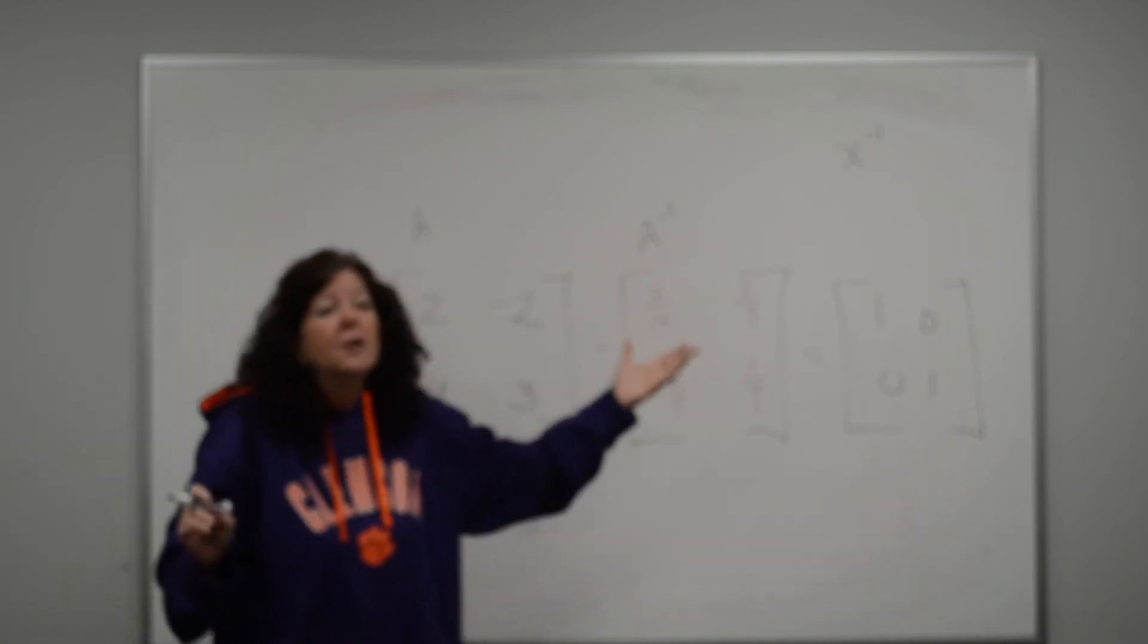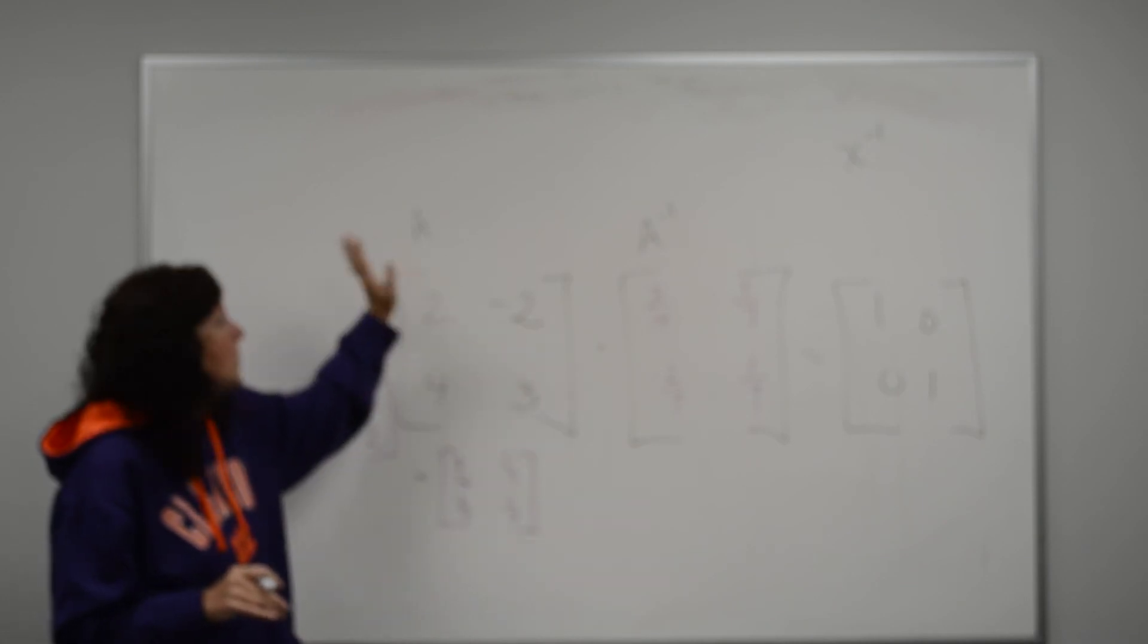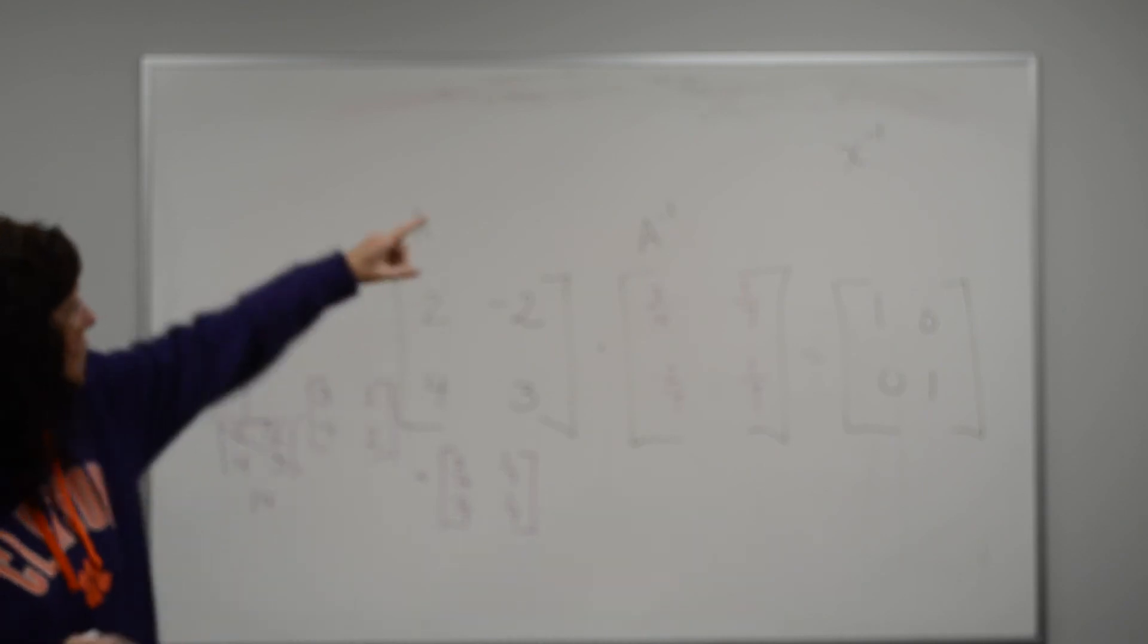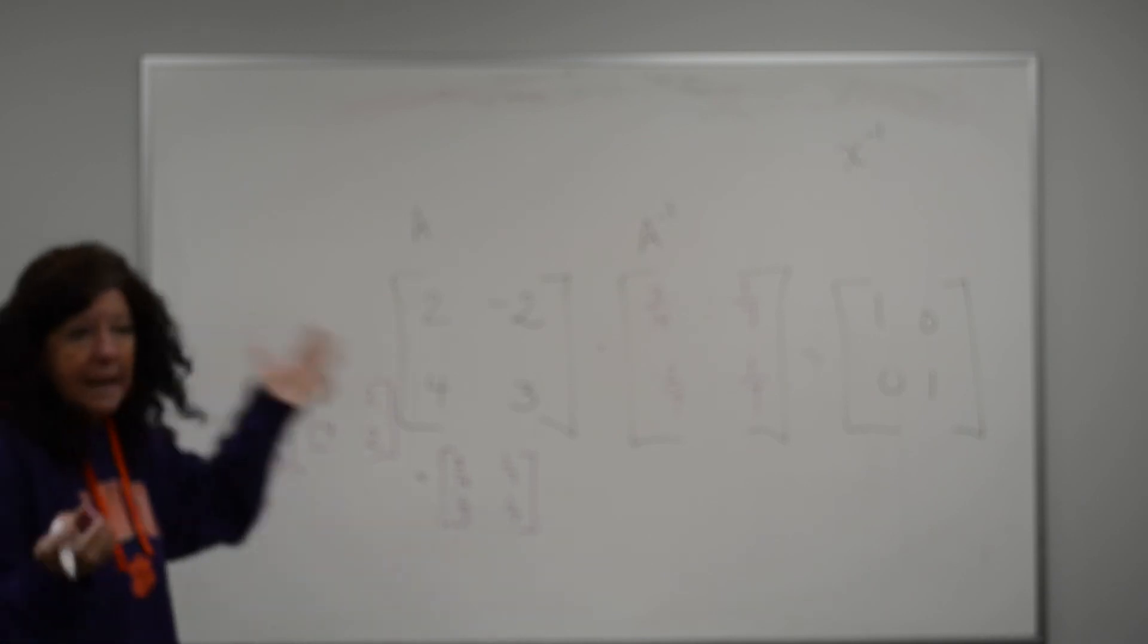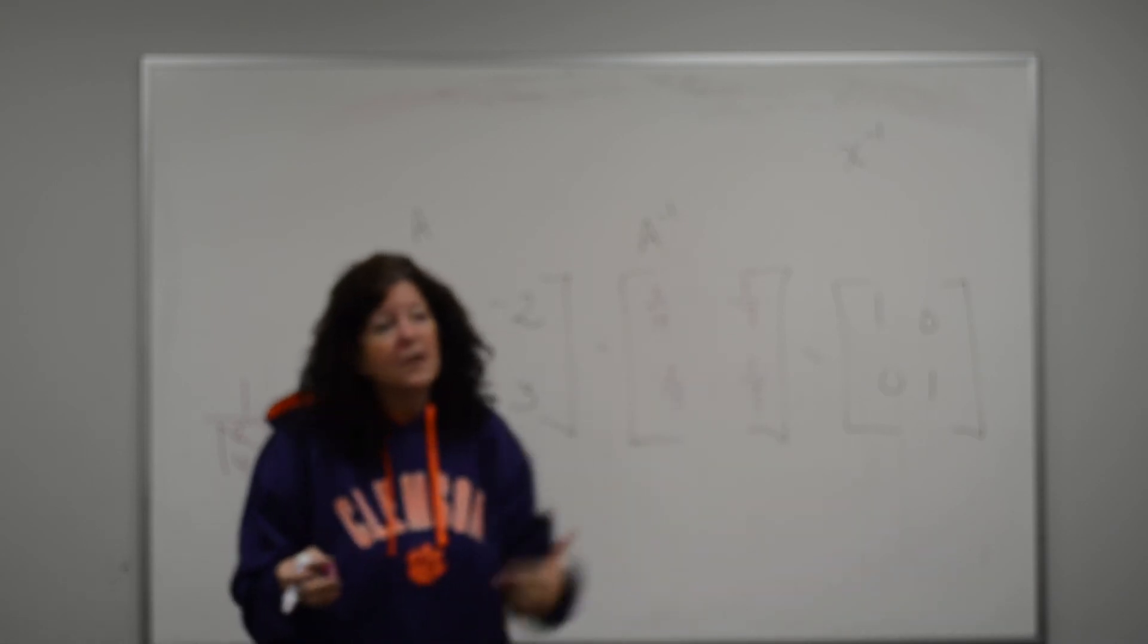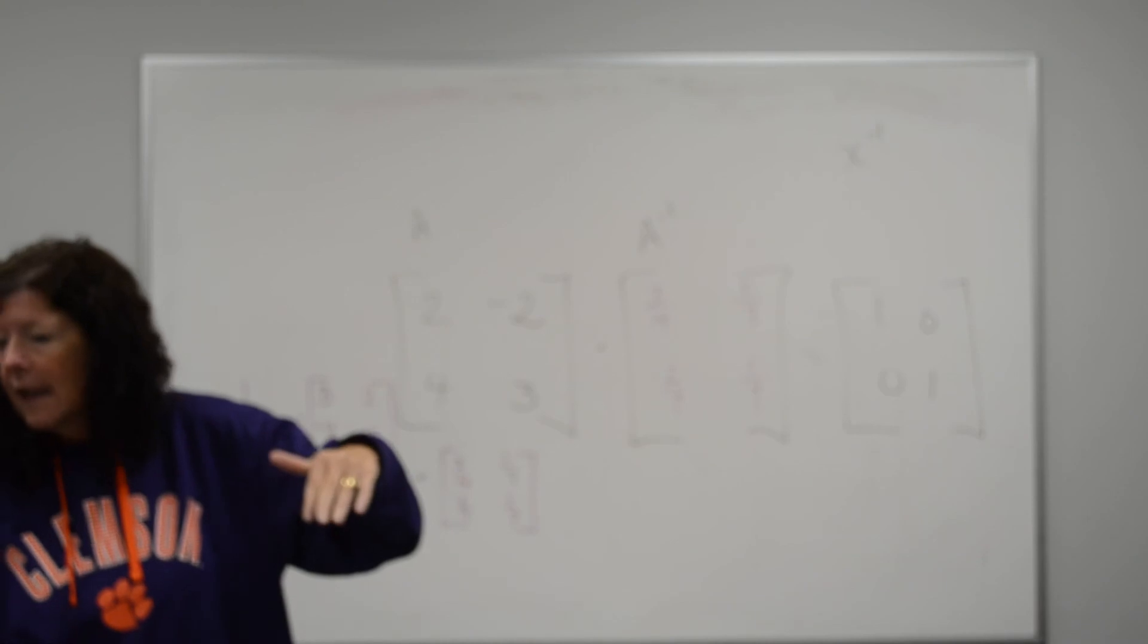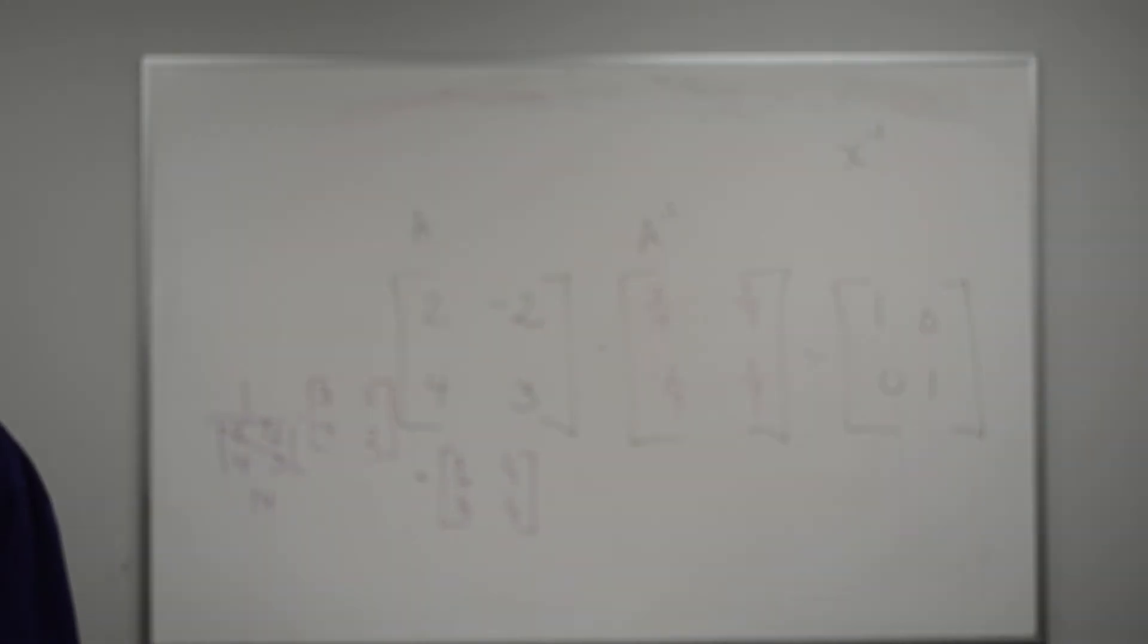If you just put that into your calculator as matrix A, and you select matrix A, and you hit that x to the negative first power, or you can just raise it to the negative 1 power, it does the same thing, and I hit enter. I'm going to get decimal values for this, but if I turn around and hit math, and hit fraction, and hit enter again, it's going to put it in that form right there. Does that kind of make sense?